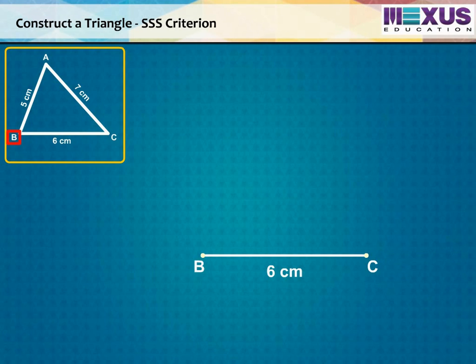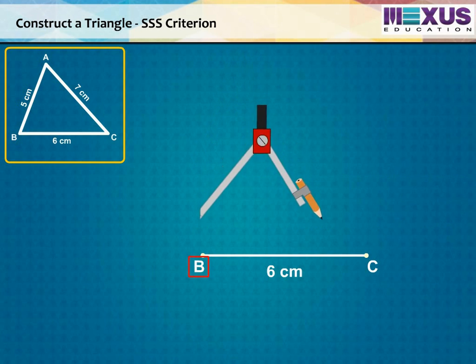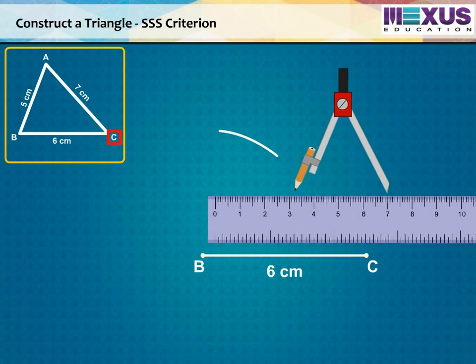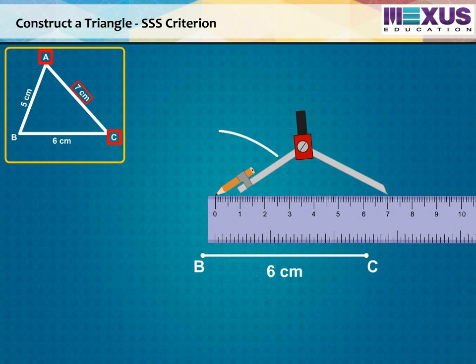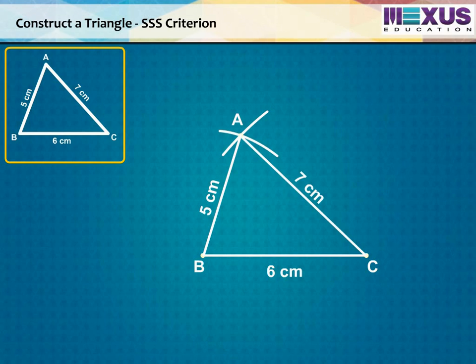Now, from B, point A is at a distance of 5 cm. So, with B as center, draw an arc of radius 5 cm. Then, from C, point A is at a distance of 7 cm. So, with C as center, draw an arc of radius 7 cm. Now, A has to be on both the arcs. Therefore, mark the intersection point of arcs as A and join AB and AC. So, we get the required triangle ABC.